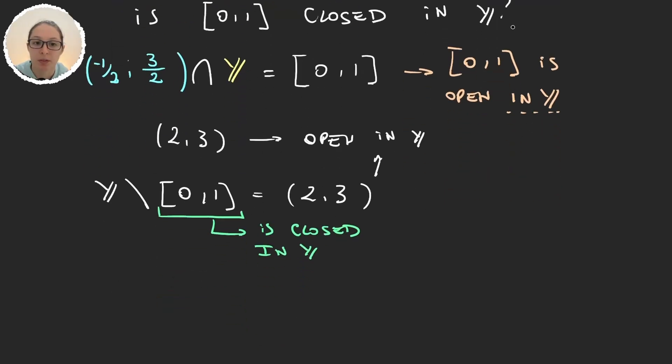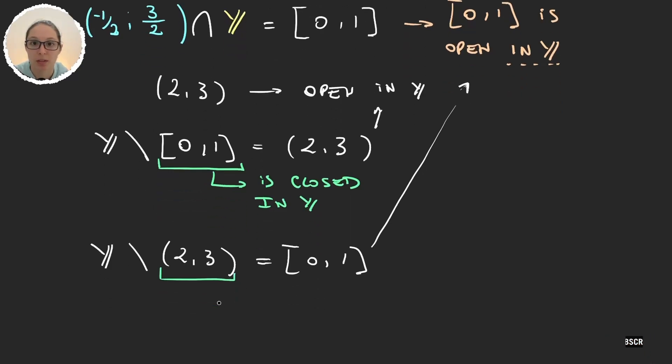And also we can do the same for (2,3). Our subspace minus (2,3) gives us [0,1]. And we said that [0,1] was open. So this shows that (2,3) is closed in Y.